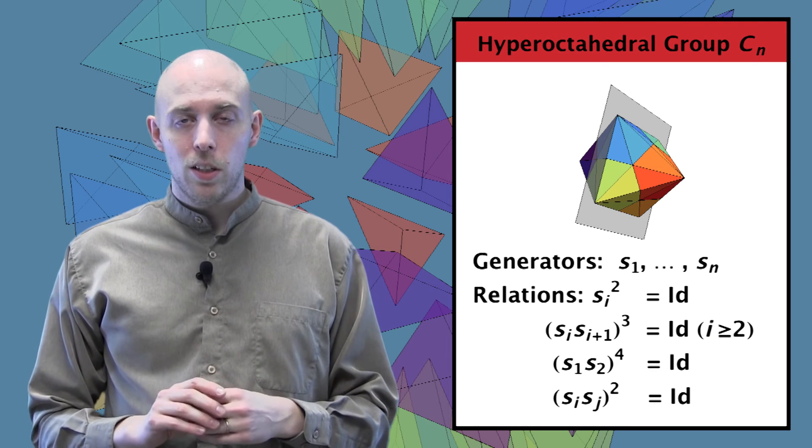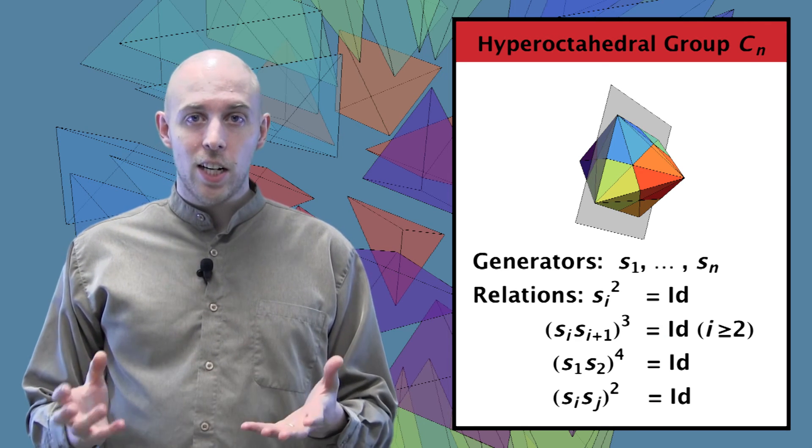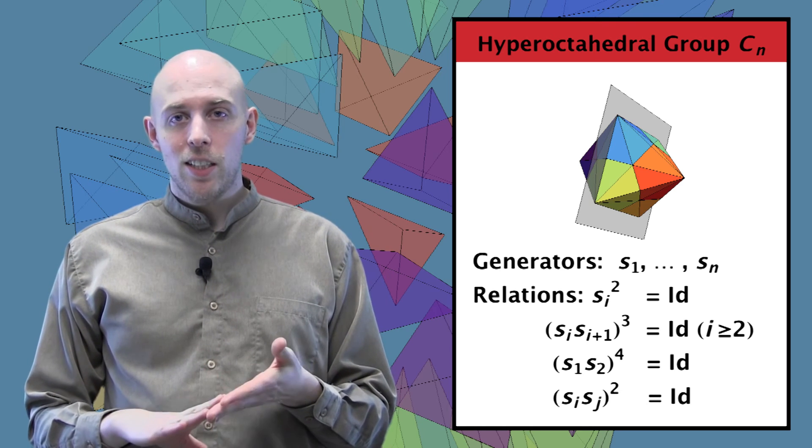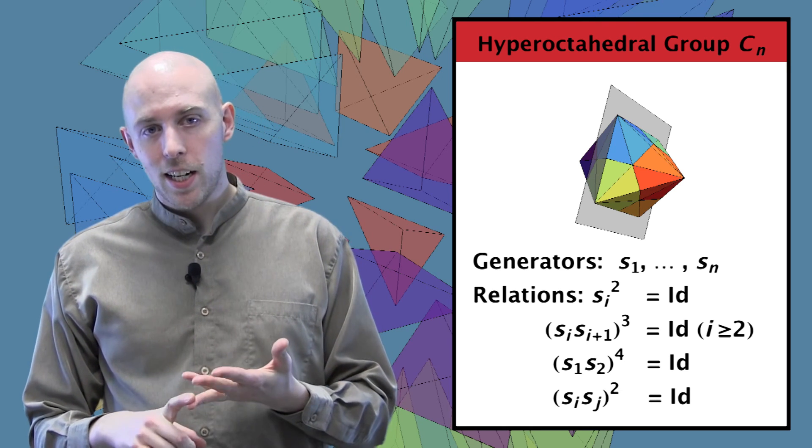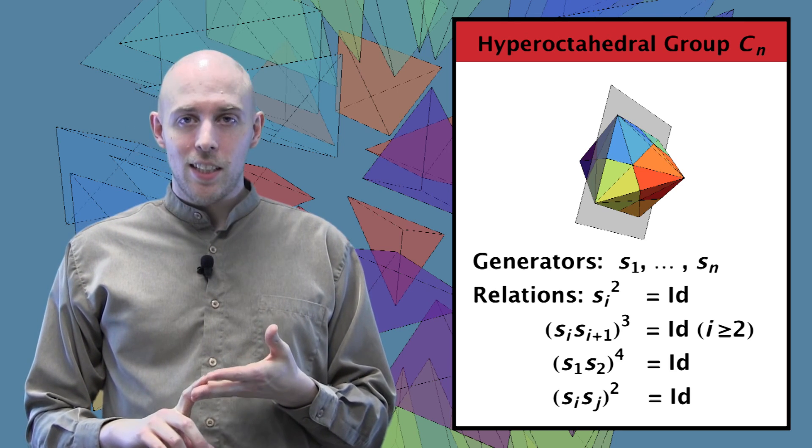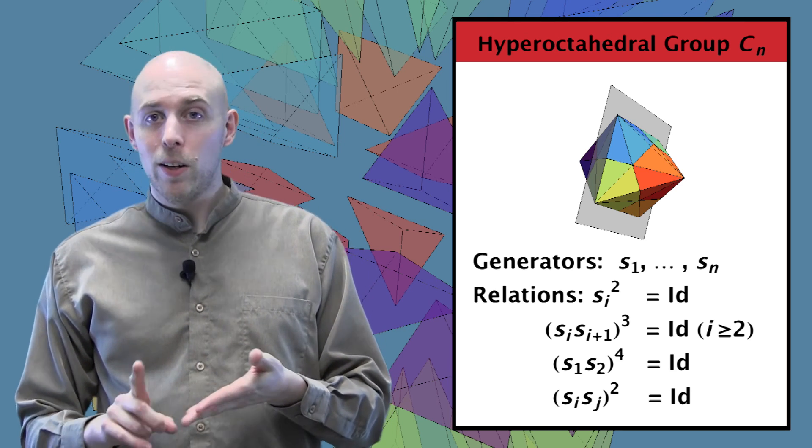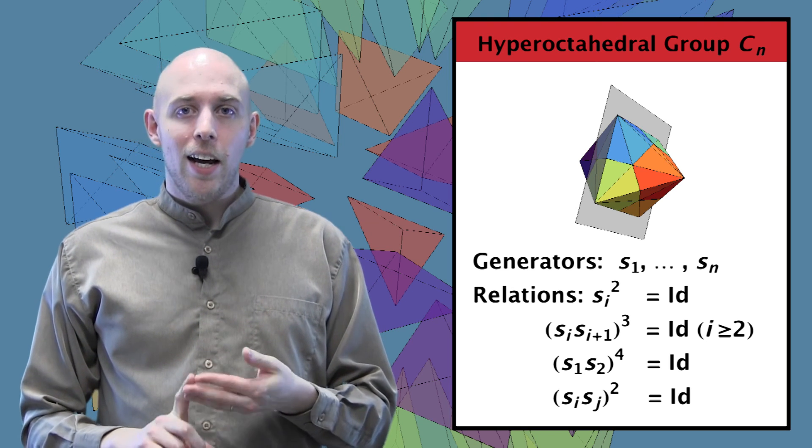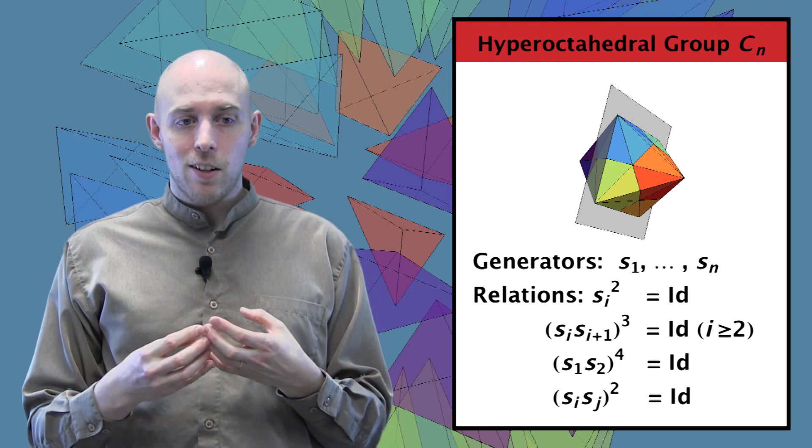So in general, the hyperoctahedral group Cn is generated by n generators S1 through Sn, and relations of the form Si² is equal to the identity, (Si, Si+1)³ is equal to the identity, except for when i is one, in which case (S1, S2)⁴ is equal to the identity. And when you have non-consecutive generators, they commute.